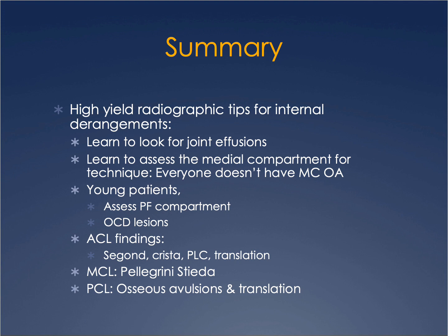In summary, we've covered high-yield radiographic tips for internal derangements of the knee: identifying joint effusions, assessing the medial compartment without over-calling osteoarthritis, patellofemoral issues in young patients, OCD lesions, ACL findings including the Segond fracture and deep sulcus terminalis depression, posterolateral corner injuries, anterior tibial translation, medial collateral ligament and Pellegrini-Stieda lesion, calcific tendinosis, and PCL bony avulsions with tibial translation. Stay safe, and I hope this helps. Thank you.